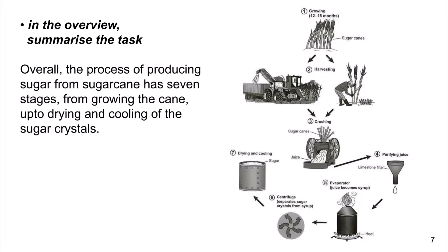In the overview, summarize the task. Overall, the process of producing sugar from sugarcane has 7 stages, from growing the cane up to drying and cooling of the sugar.